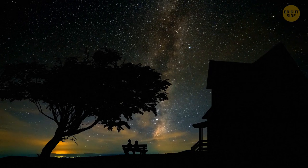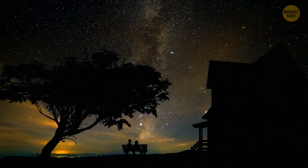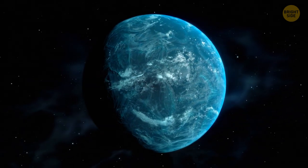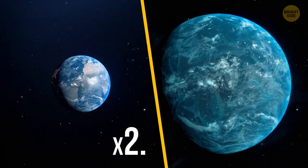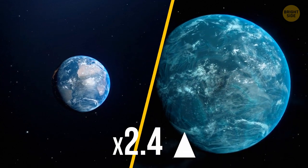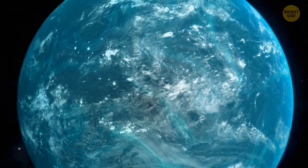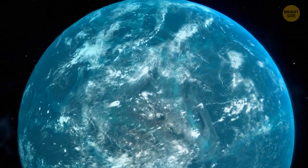So, no matter how much you strain your eyes, you won't see this star in the night sky. The planet Kepler-22b is about 2.4 times larger than our Earth. And that's pretty good.